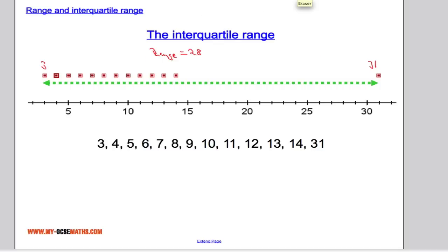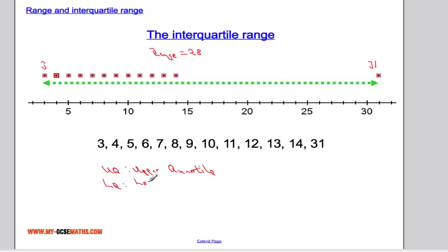This is why we use something called the interquartile range, which will tell us about how spread out the middle part of the data is. To find the interquartile range we're going to need something called the upper quartile and the lower quartile. If I find the difference between the upper quartile and the lower quartile, that will give us the interquartile range.